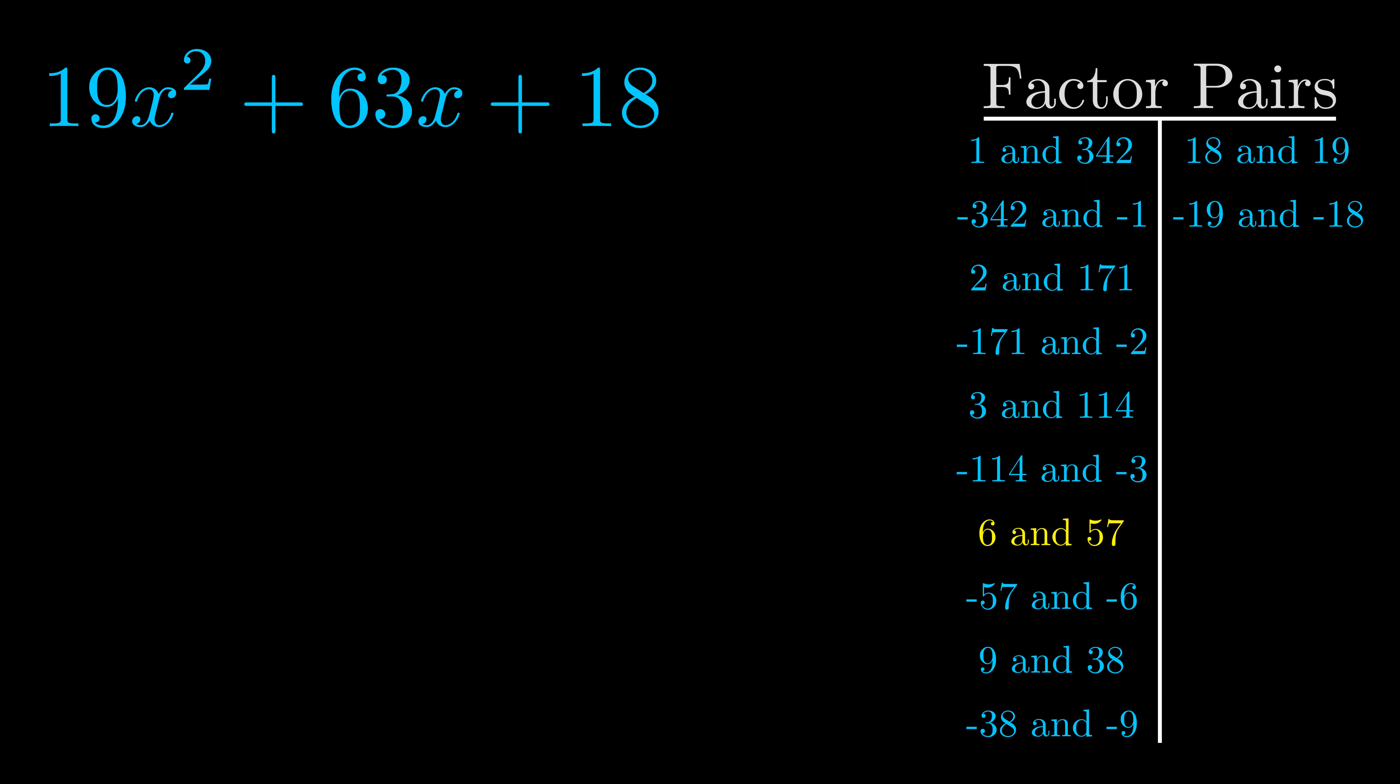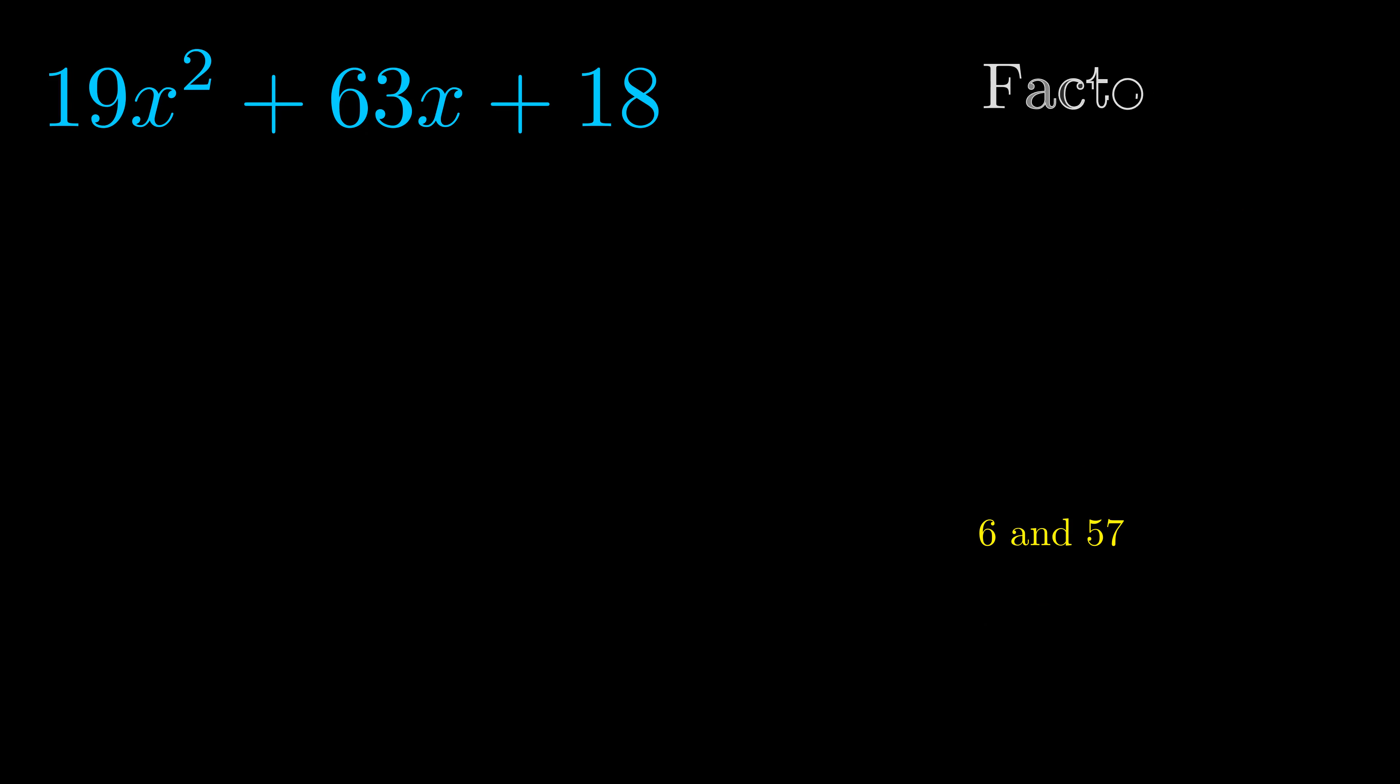And really this is the only factor pair that we need. Now once we have this factor pair what we want to do is use it to split up the b value.